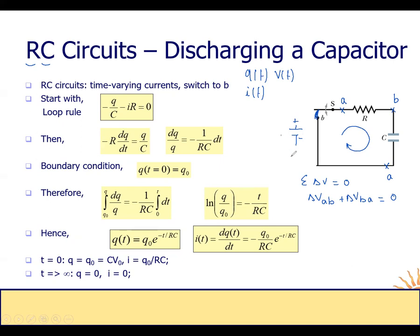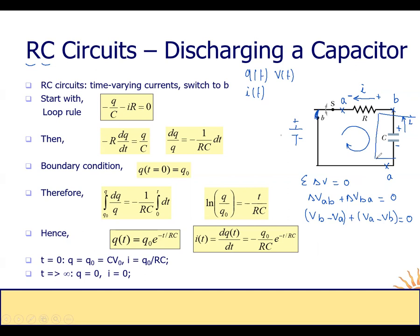We use the loop rule: summation of voltage equals zero. So delta V between A and B plus delta V between B and A equals zero. Initially, before discharging, we have the positive charge on one side and the negative charge on the other side, so here we have the positive side and here we have the negative side. In this case the current must flow in this direction — from the positive side to the negative side.